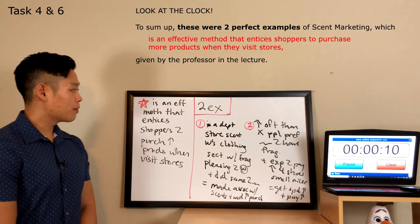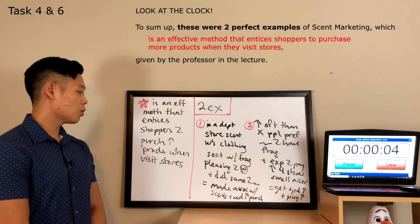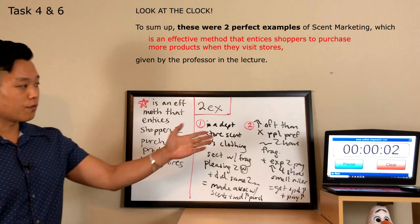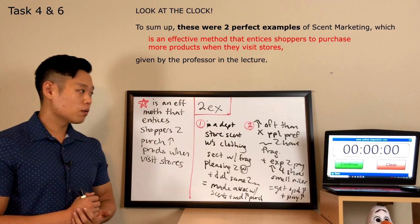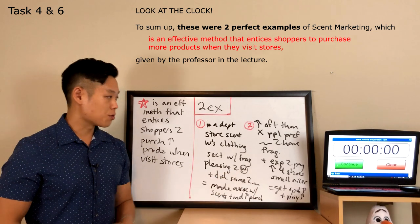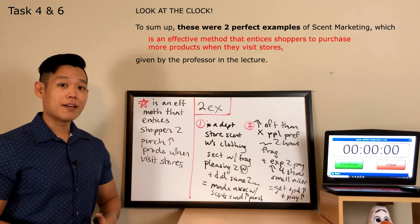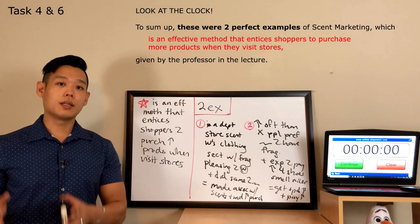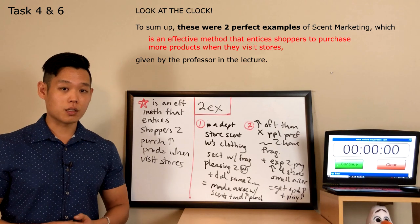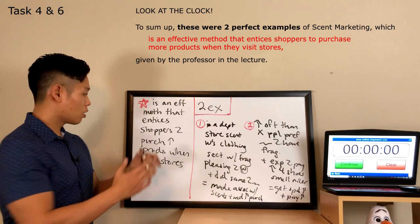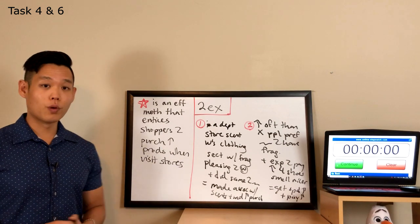To sum up, these were two perfect examples of scent marketing, which is an effective method that entices shoppers to purchase more products when they visit stores, given by the professor in the lecture. Now, I had about 14 seconds left when I was done summarizing the lecturer's information, which is more than enough time for me to include the definition that I got from the reading passage in the ending statement. So, if you have approximately 15 seconds left, or if you have more than 15 seconds left, definitely go for the definition in the ending statement. Now, let's move over to task six.